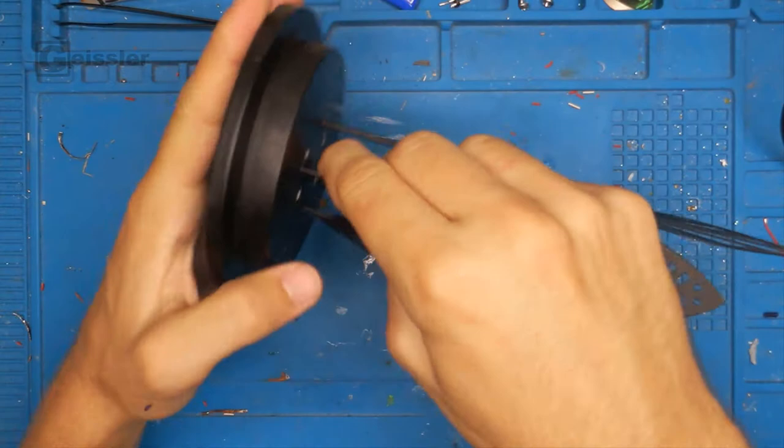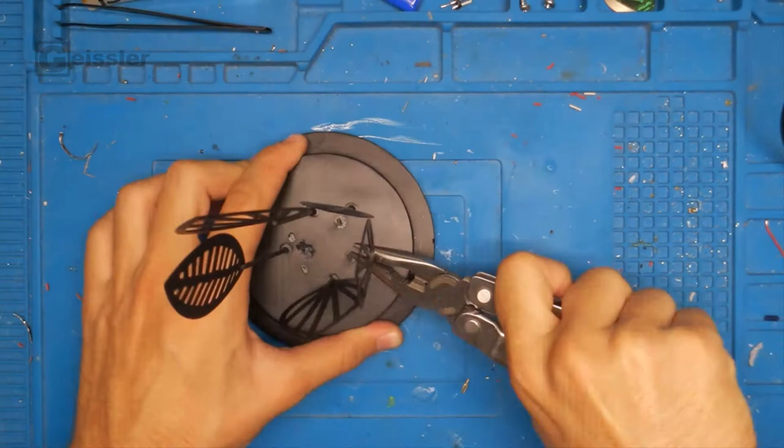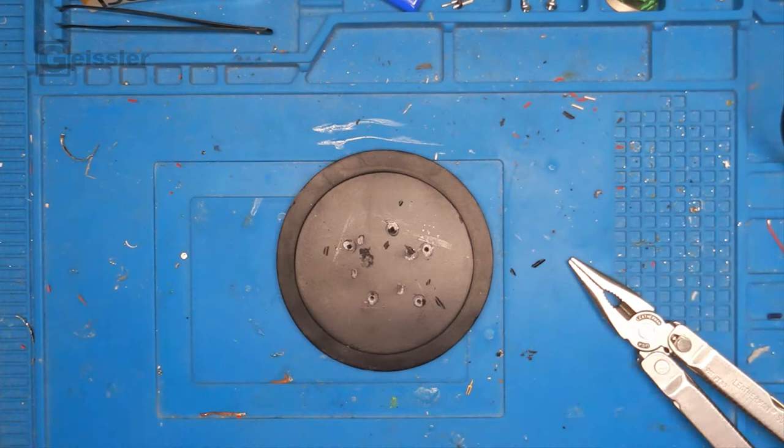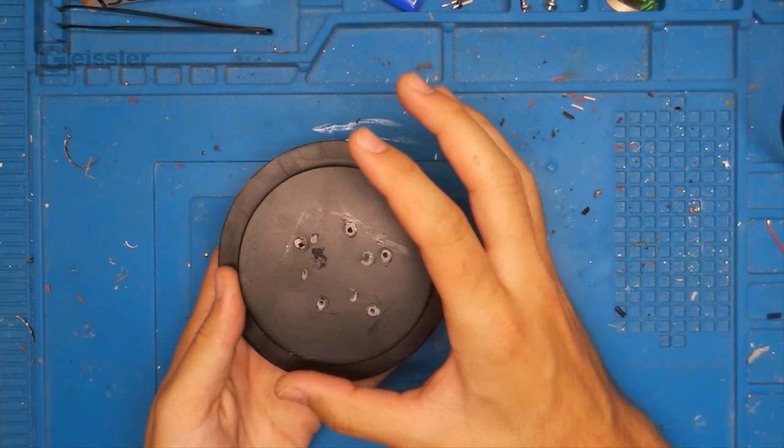Alright to get started I first have to remove these things from the wooden base. Okay now the base is free and I want to put on here a little plaster base to model the swamp and everything. So I have to make a little mold.